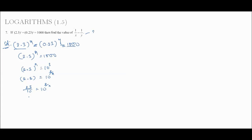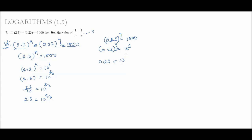We keep 2.3 equals 10 to the power 3/x. Now from 0.23 to the power y equals 1000 equals 10 cubed, so 0.23 equals 10 to the power 3/y.